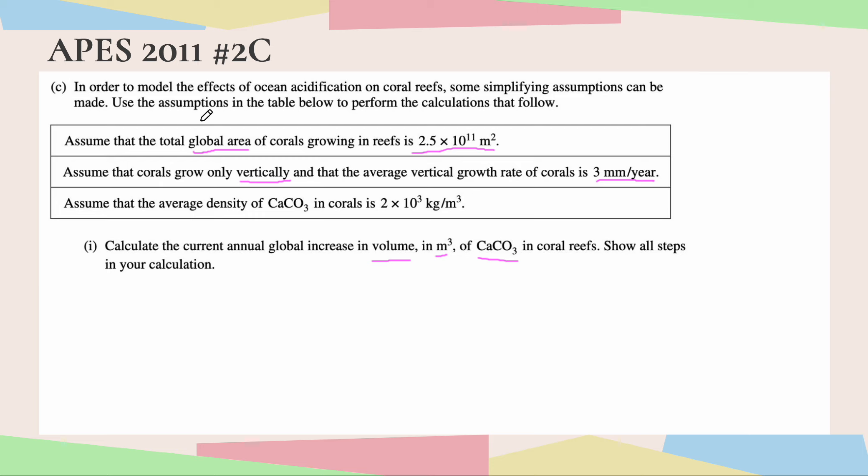We're given the area of the base figure, which is this 2.5 times 10 to the 11th. So I'm going to go ahead and write that out now. 2.5 times 10 to the 11th meters squared, and then we're effectively given the height, because they only grow vertically, and then we have the vertical growth rate. So we are going to multiply it by the 3 millimeters per year.